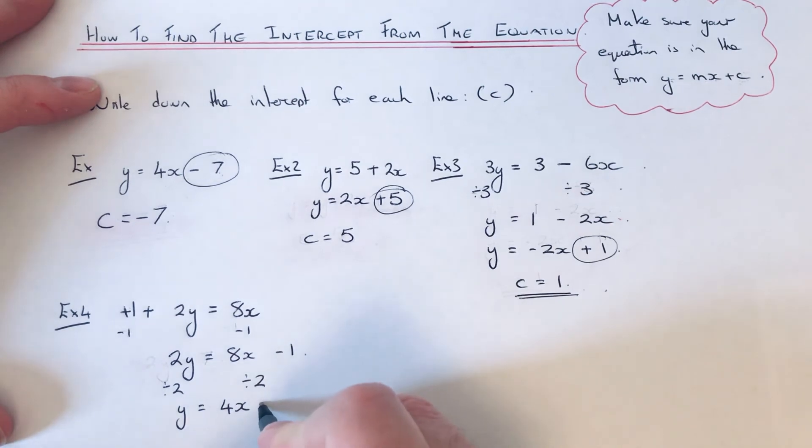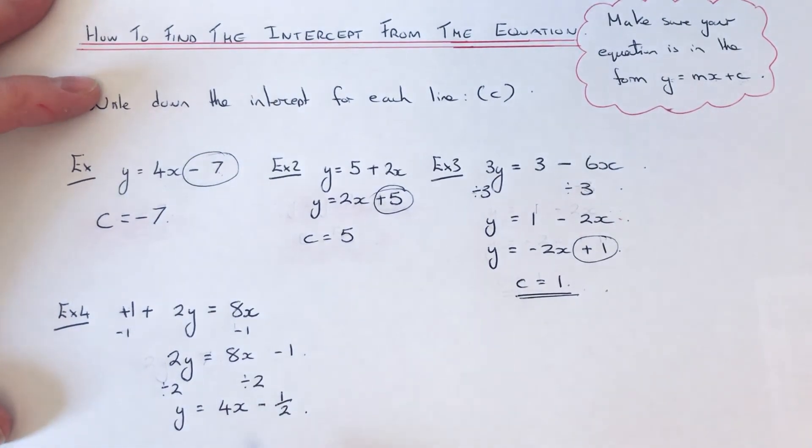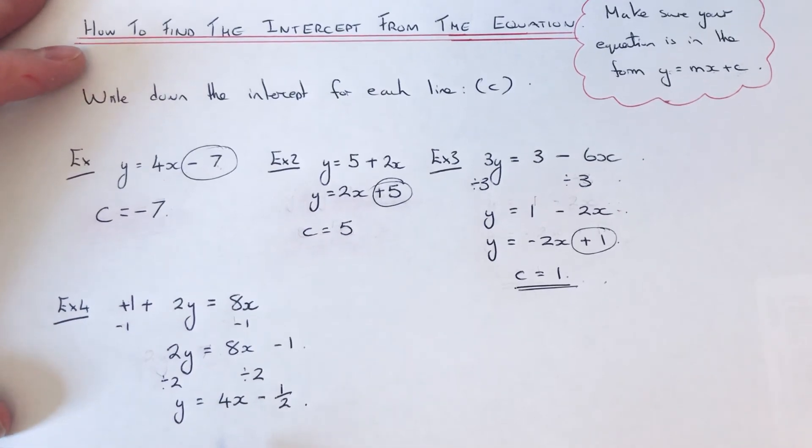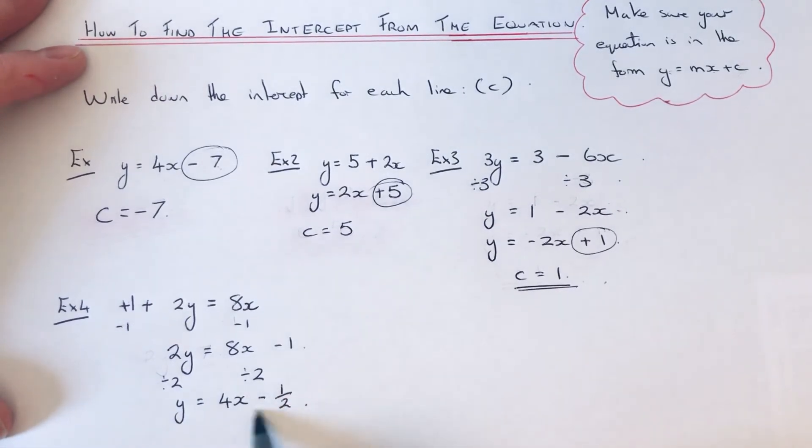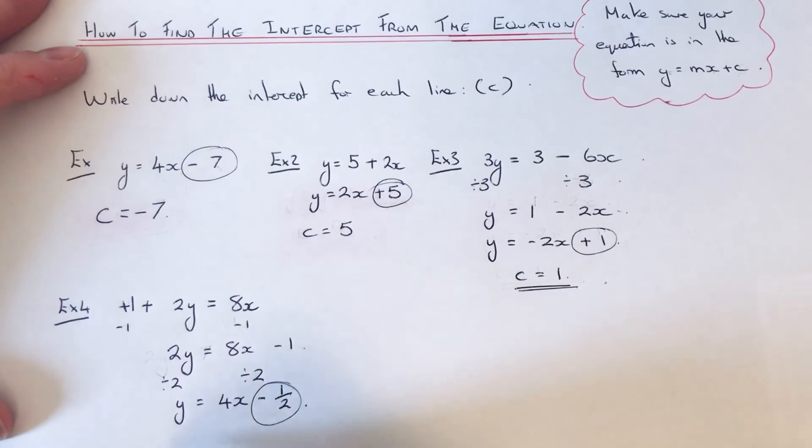So again, we just need to look for the number at the end. The number at the end is minus 1 half, so that is our intercept.